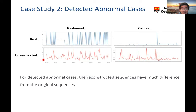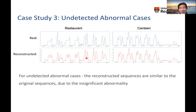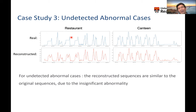When the real data and reconstructed data show a significant difference, we can catch the abnormal cases. However, this also shows a limitation of our approach: some features we cannot learn because they are not significant abnormalities. When there is no significant abnormality in the data, we cannot distinguish the difference — the real data and reconstructed data look similar, but unfortunately the data is actually an abnormal case, meaning we fail to identify that kind of anomaly.